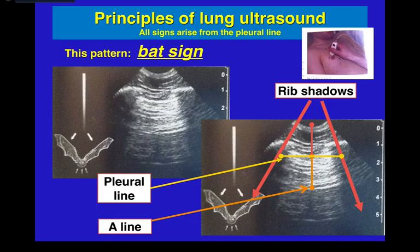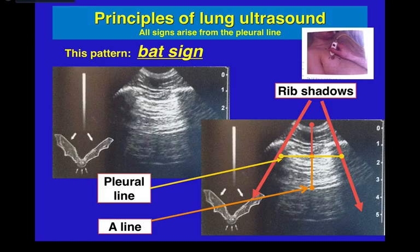In this basic lecture, we're going to learn two principal signs: the bat sign, and then the A line and the B line. The bat sign indicates the two rib shadows and then the pleura, originally described in the literature 10–15 years ago. Although the name isn't critical, what is important is that an optimal view includes both rib shadows, a pleural line, and enough depth to check for A lines or B lines.